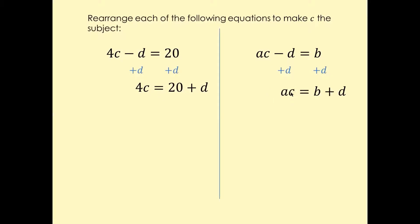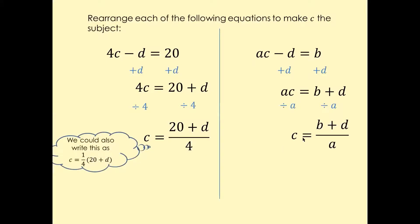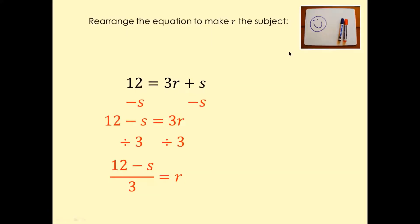And in this case, you have to cancel a, so divide by a on both sides. So dividing by 4 gives 20 plus d over 4, and dividing by a gives b plus d over a. So: 12 equals 3r plus s, and we want to make r as a subject. Cancel s on both sides — minus s on both sides. 12 minus s equals 3r. Then divide by 3 on both sides, and that's going to be 12 minus s over 3.